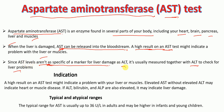We also measure ALT together with AST to determine if there is liver damage. A high result on the AST test might indicate a problem with the liver or muscles. Elevated AST without elevated ALT may indicate heart or muscle disease. But if ALT, bilirubin, or ALP are also elevated, then that indicates liver damage. The typical range for AST is usually 36 units per liter in adults, and may be higher in infants and young children.